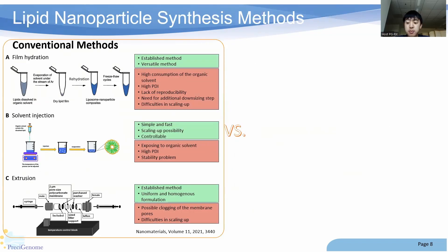Now transitioning into the synthesis methods of LNPs. On the left, we can see the conventional methods of LNP development. Methods like extrusion, thin film hydration, and solvent injection have been the cornerstones of LNP production, and while effective, they each come with their own sets of advantages and challenges. Extrusion, for example, is known for producing uniform-sized LNPs with low polydispersity index — meaning more uniform nanoparticles — but it comes at the cost of being very time-consuming and costly, especially when scaling up to larger scale production. Likewise, thin film hydration, although well-established, lacks reproducibility and consistent production of LNPs, which is very important.